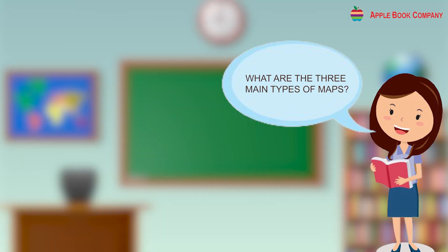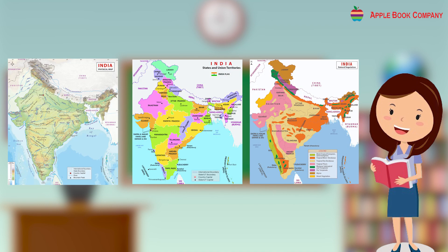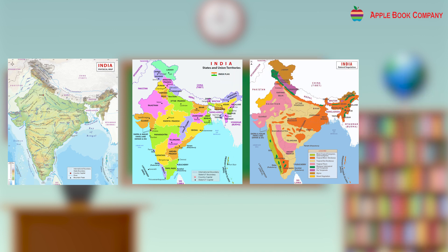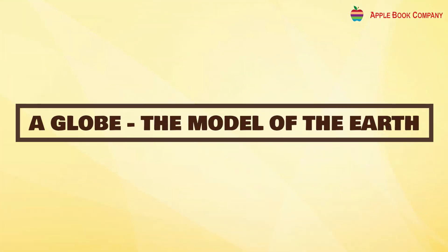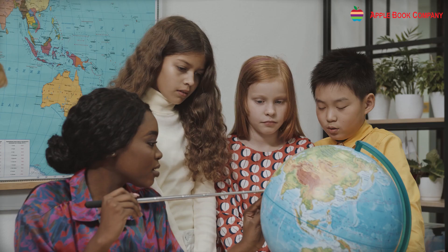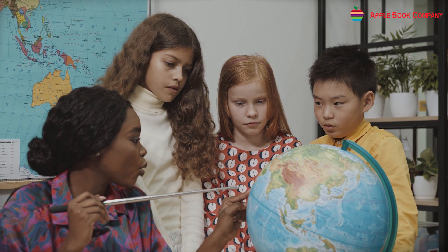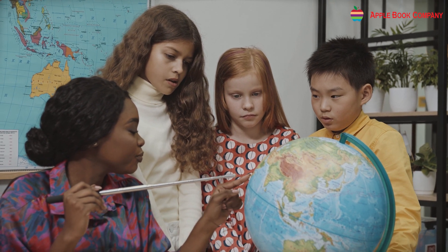So what are the three main types of maps? Correct! And what kind of information do they show? Correct! A globe is a model of the earth and is a teaching tool in the classroom.